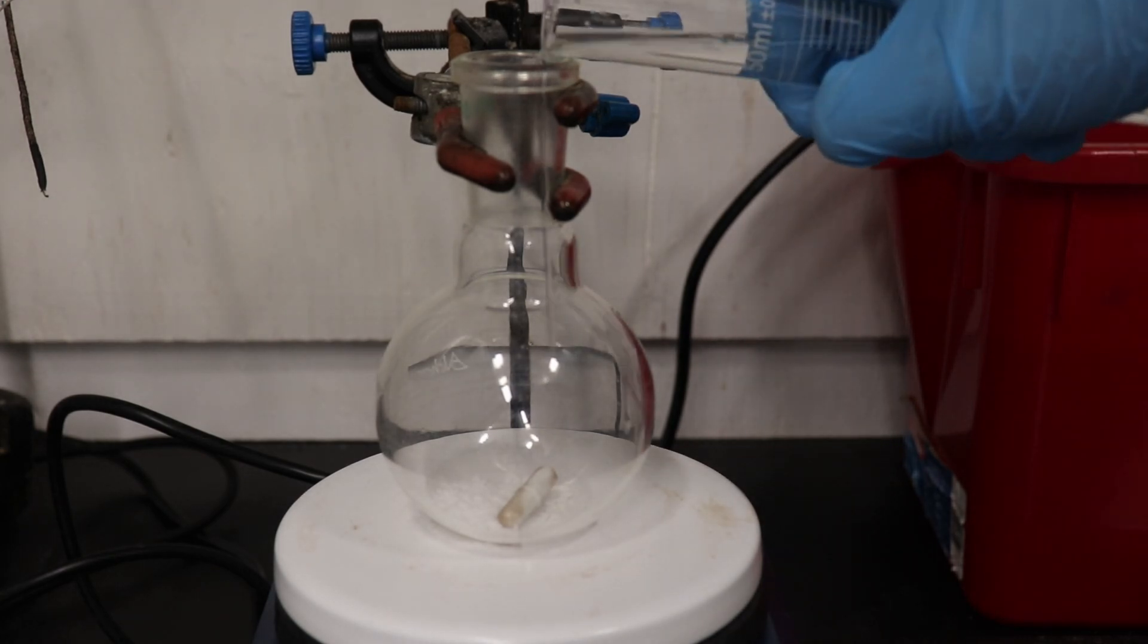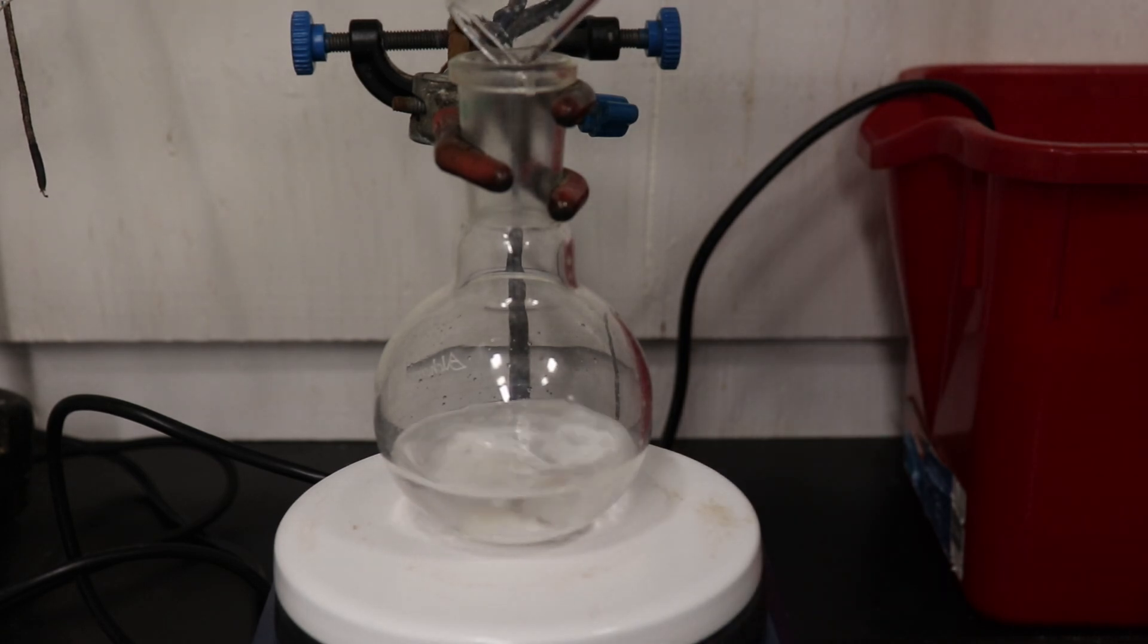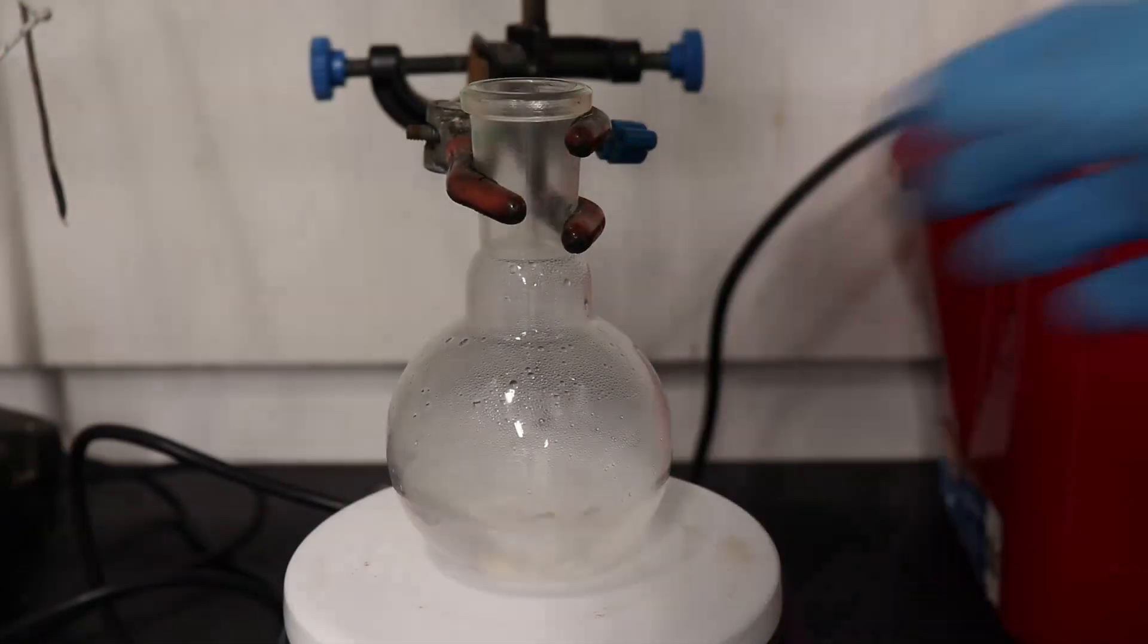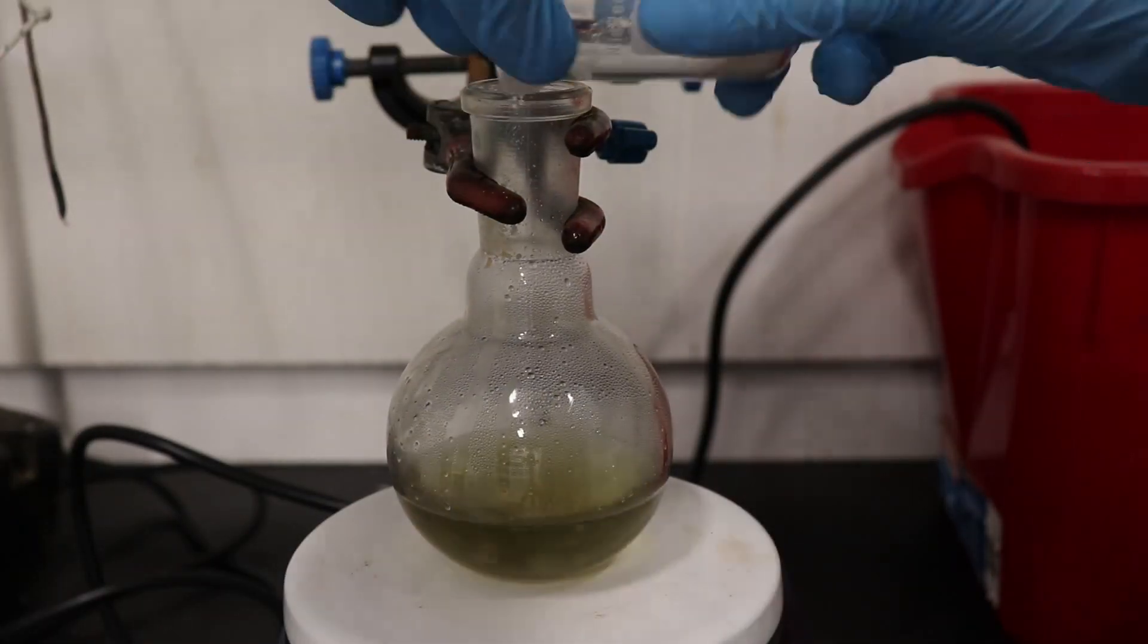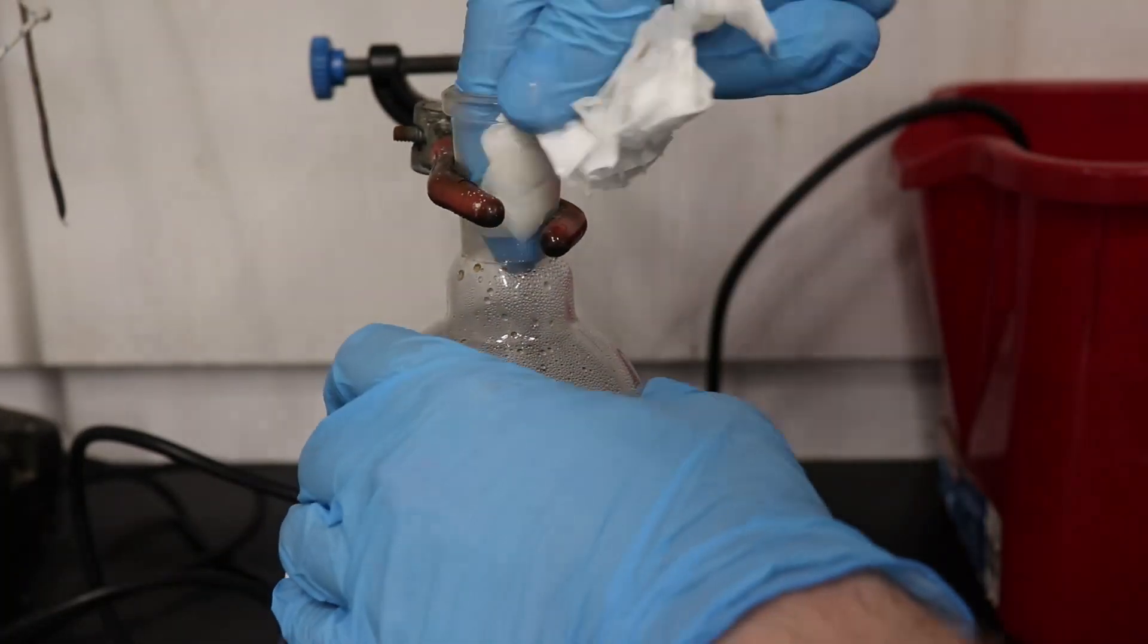To begin, 2.2 grams of potassium hydroxide was weighed out and added to a flask. Then 40 milliliters of methanol was added, and the mixture was stirred until completely dissolved. Next, 5 grams of 2-napthol was added and allowed to completely dissolve. Then the solution was allowed to cool back down to room temperature.